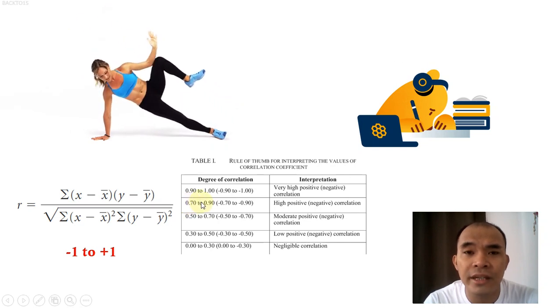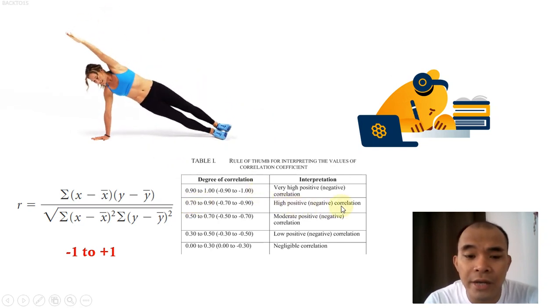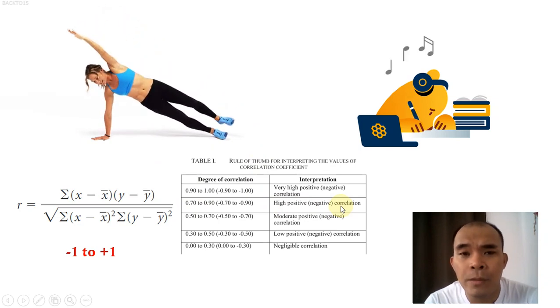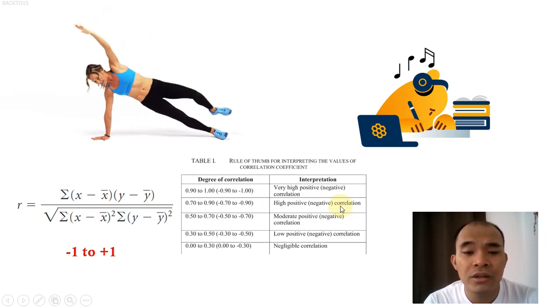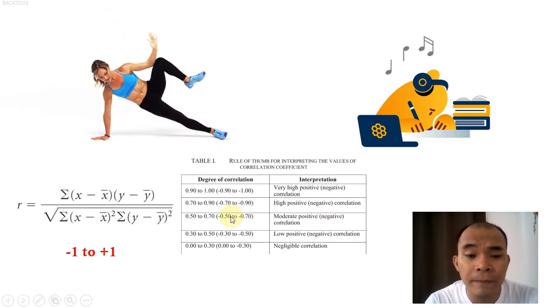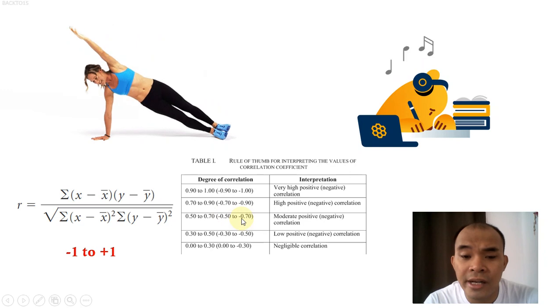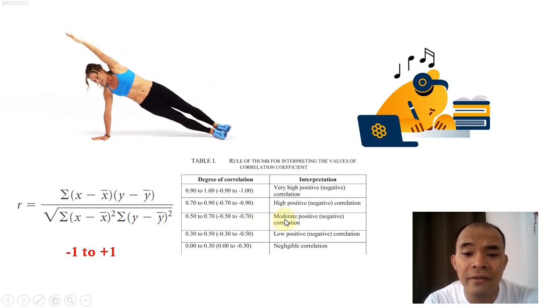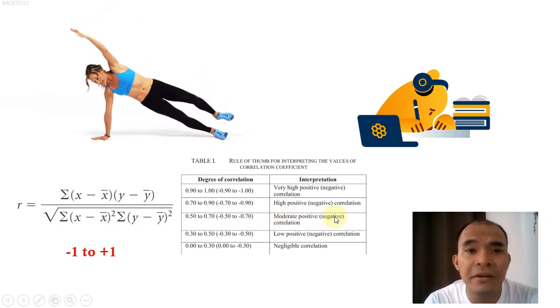If the value is negative, let's say negative 0.65, we are going to take a look at here. So negative 0.65 belongs in this range. So we can say that they have moderate negative relationship.